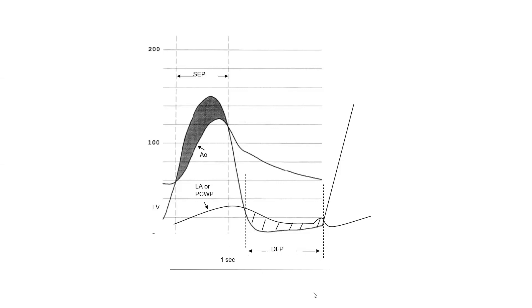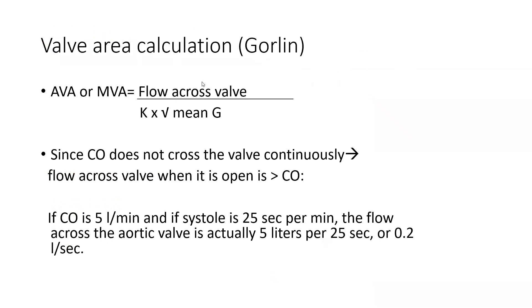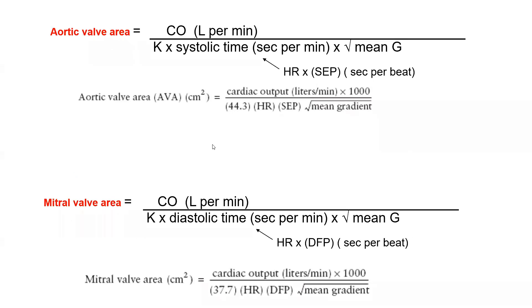The constant for the mitral valve area is slightly lower at 37.7. That is the true Gorlin equation. To remember it grossly: flow across the valve divided by the square root of mean gradient, with a few minor additional components and a constant.